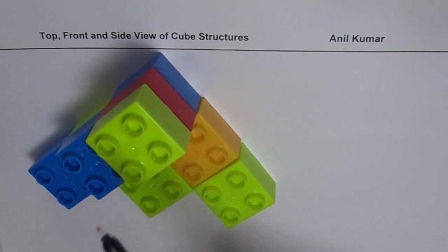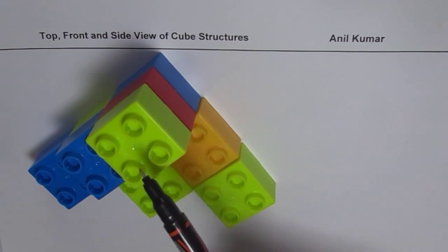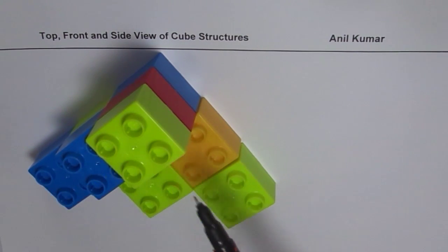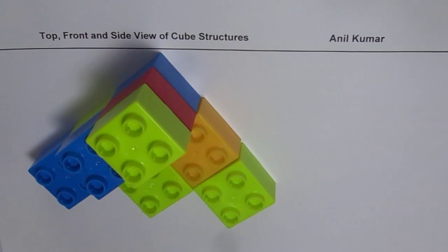The top view is something which you're looking at from the top. What you see is a structure like this — you see one, two, three, four, five, six cubes arranged in a particular fashion. So that will be your top view.